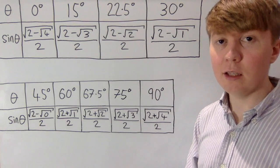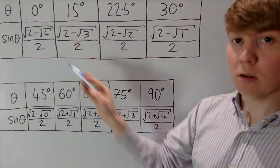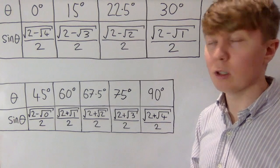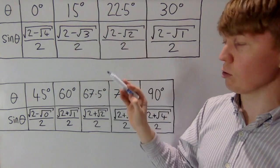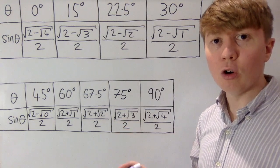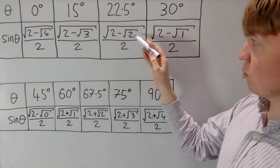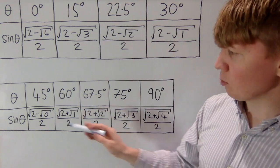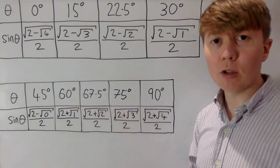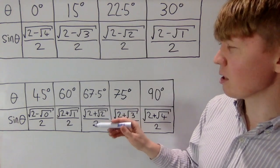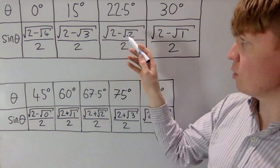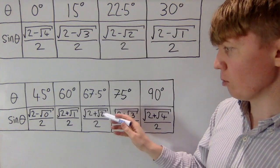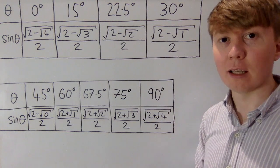Let's see how this trick works for sin θ for each of these angles. Sin of 0 can be written as the square root of 2 minus root 4, all over 2. Then for sin 15, the 4 decreases to a 3: root 2 minus root 3, all over 2. Then the 3 goes down to a 2, giving root 2 minus root 1 for sin 30, and root 2 minus root 0 for sin 45. The pattern continues with positive values: we add root 1 for sin 60, then root 2, root 3, and finally root 4 for sin 90 degrees.